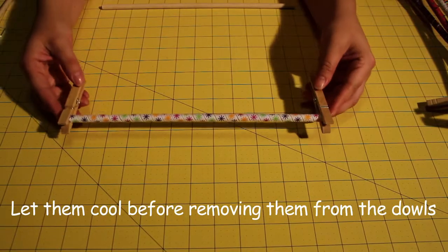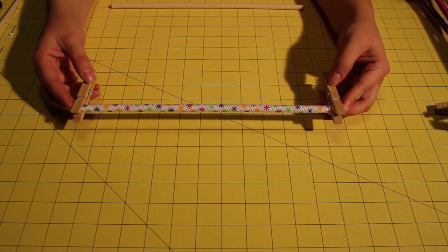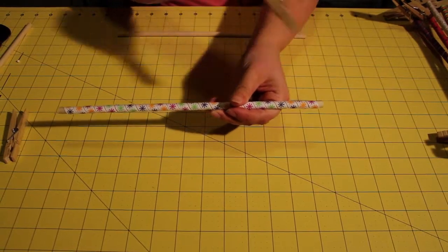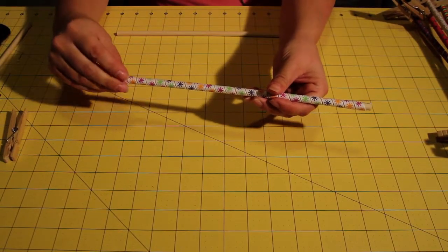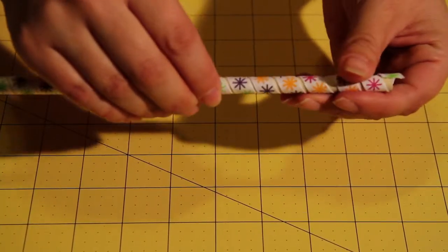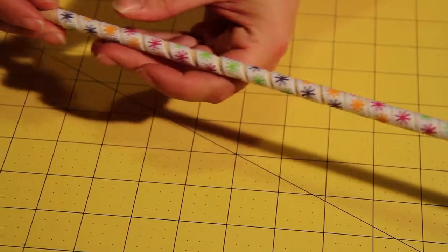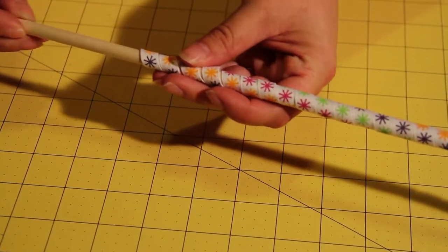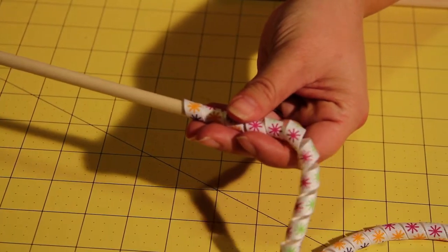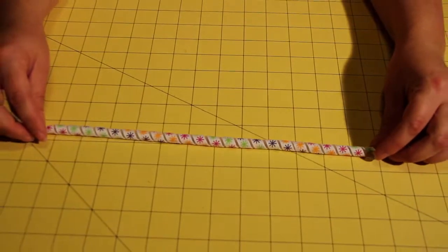Okay so now that they have completely cooled you are going to remove the ribbon from the dowel. Sometimes it sticks. I like to do this just to loosen it from the dowel and then it should slide off fairly easy. So there you have your curled ribbon.